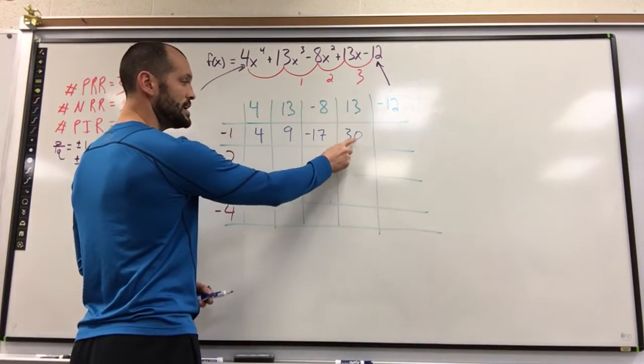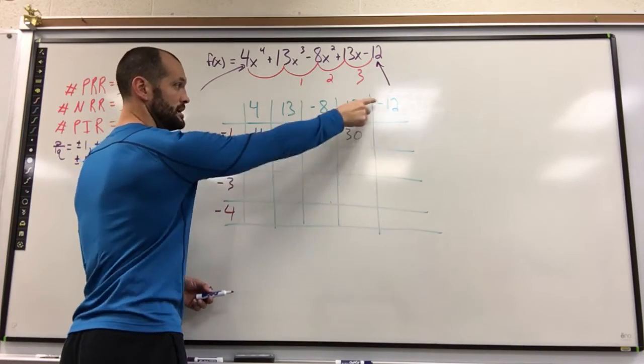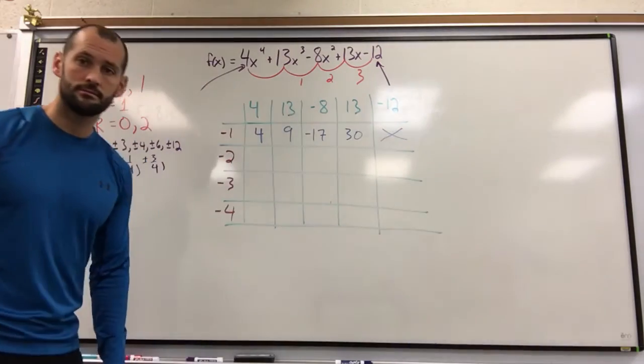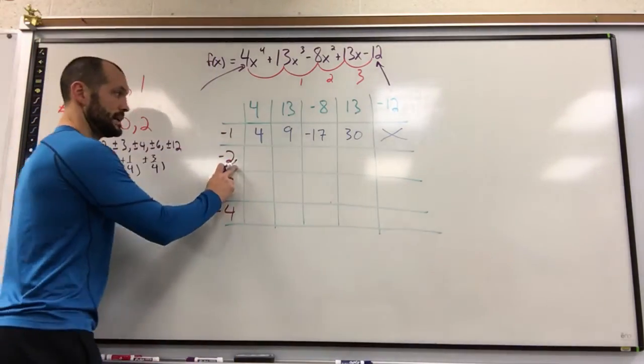So for instance, at this moment right here, I know that if I take 30 times negative 1, it's not going to cancel out negative 12. So I'm just going to move on right now. That's our strategy. Moving on to negative 2.